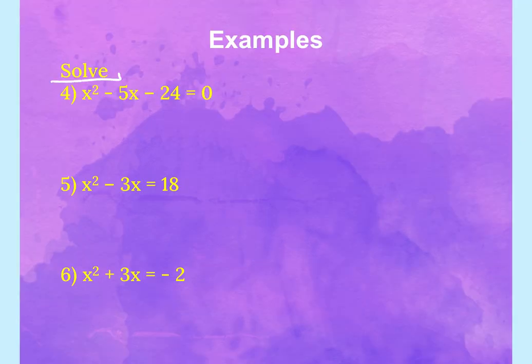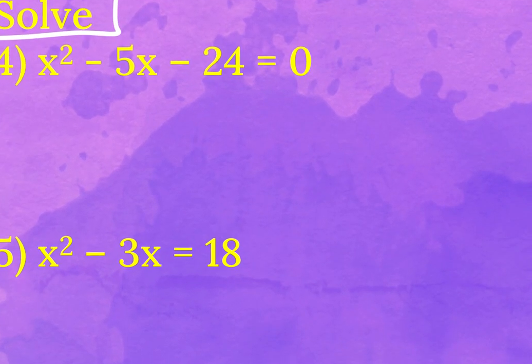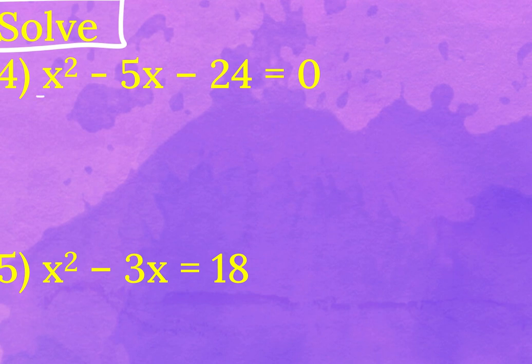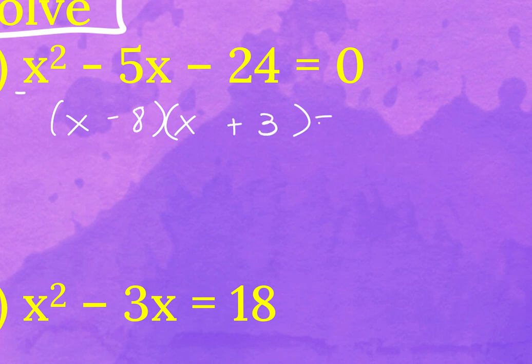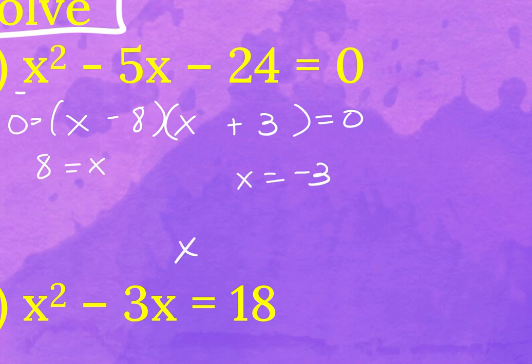Then we switch to solving. Your quiz is also going to switch — you're going to do some factoring and some solving, so pay attention to the directions. When solving, you should go all the way to the end where it says x equals. For problem four, there's nothing in front of the x squared term. We're just looking for the factors of negative 24 that sum to negative five, which is negative eight and positive three. Split and solve — you get x equals eight and x equals negative three.